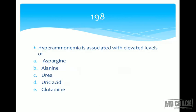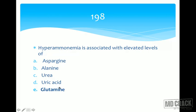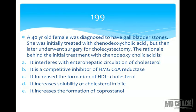Next question: hyperammonemia is associated with elevated levels of — glutamine. When ammonia levels increase, glutamate is converted to glutamine, so glutamine levels rise. Alanine from muscles is a transporter but not specifically elevated with hyperammonemia. Urea is not elevated — hyperammonemia means ammonia is not being converted to urea. Uric acid relates to purine degradation, not ammonia metabolism. The correct answer is glutamine.